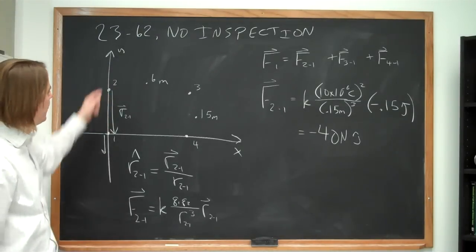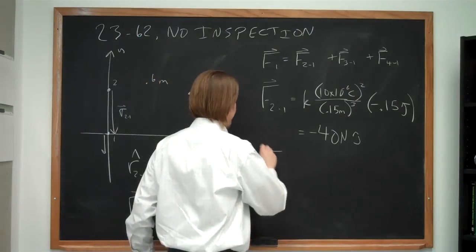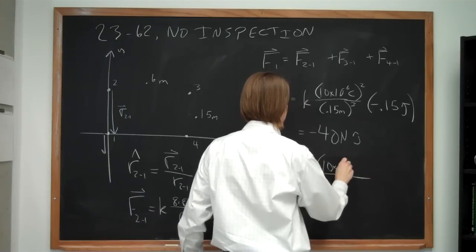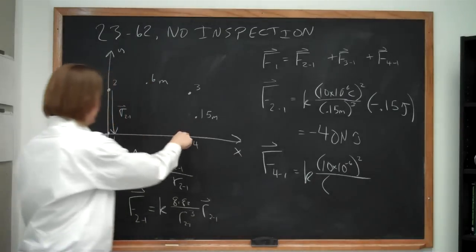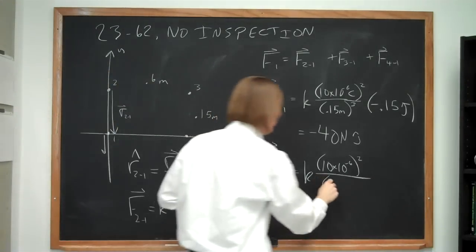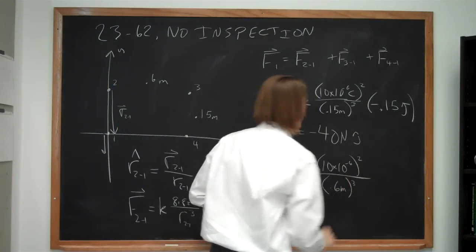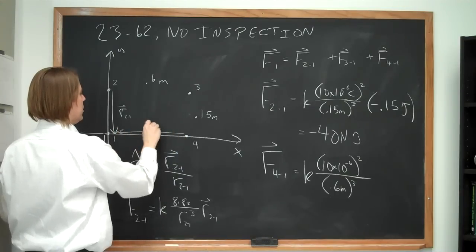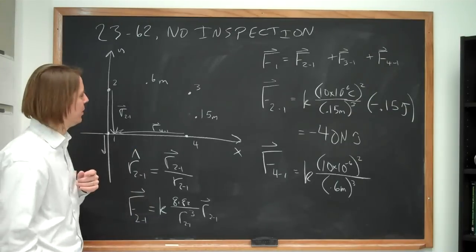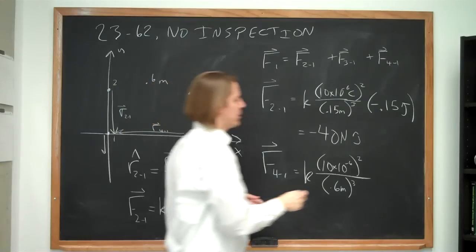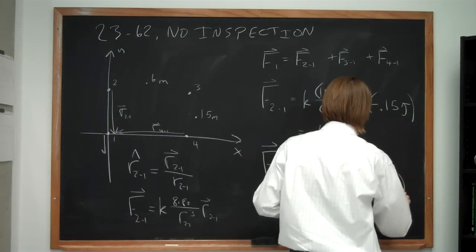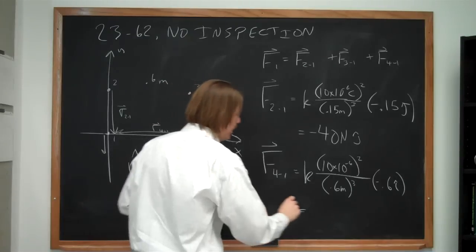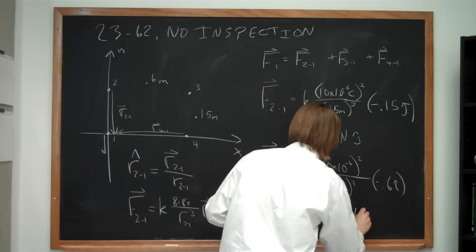We can also do this for F41. F41 equals K times 10 times 10 to the minus 6 coulombs squared over the distance of this one, it is 0.6 meters cubed. But then the vector, what is the vector of r41? It's this. There's r41. Well, it's 0.6 and it's pointing in the negative x direction, so it's negative 0.6. And in the end, that gives us the same answer we got before for F41 minus 2.5 newtons i-hat.